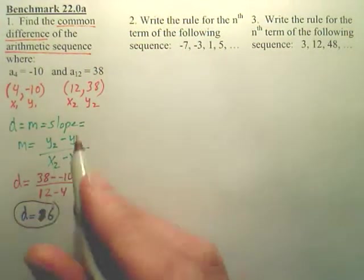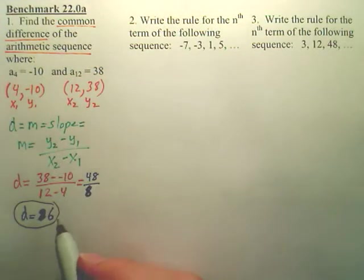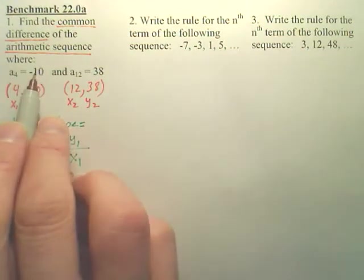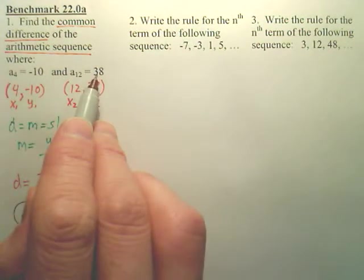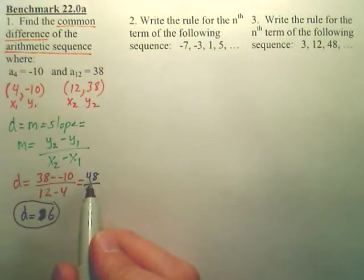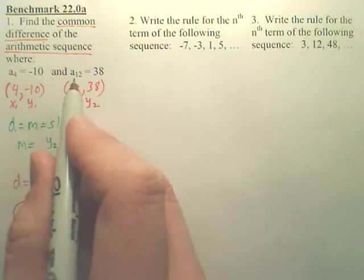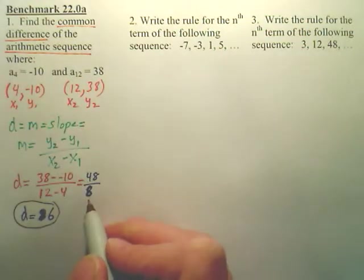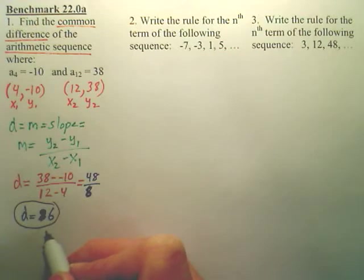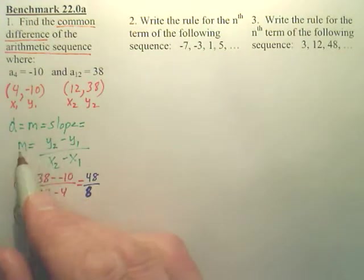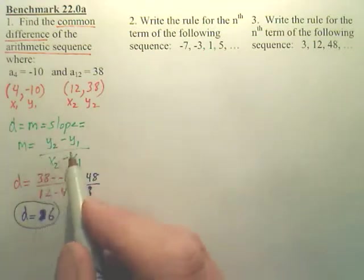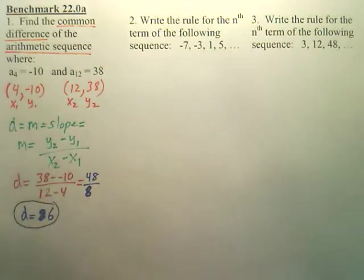Now, you can think of it as slope. I like to actually think of it logically. In my brain I go, from negative 10 to 38 is 48. That's my top number. And then from the 4th term to the 12th term, that's 8 terms. So I'm going to take 48 and divide it 8 times. That gives me my common difference. It's easier for me to think of it that way, but for some of you who want a formula, think slope. Because slope and common difference are really the same thing.